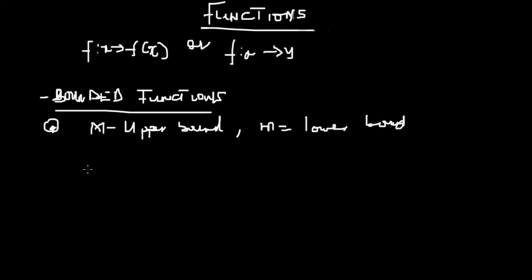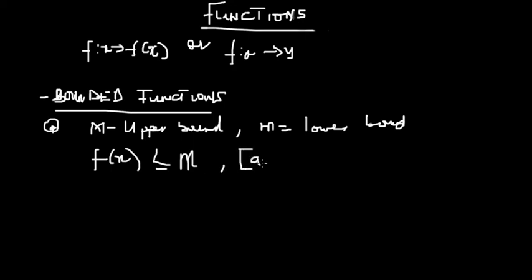For upper bounds, the function f(x) must always be less than or equal to the upper bound M to be bounded above, with respect to a specific closed set of values [a, b]. Whenever you are given a closed set and a function, and you find that the upper bound is greater than the function, it means it's bounded above.